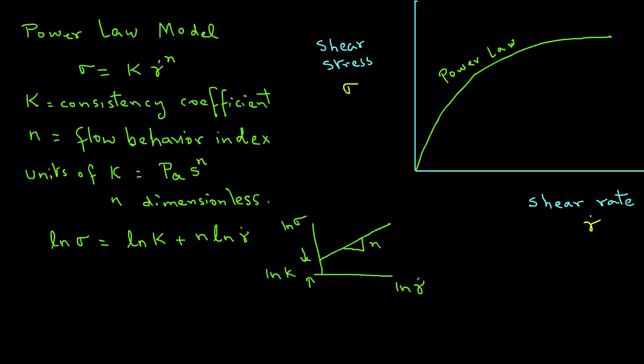Now, in case of pseudo-plastic fluids that show the shear thinning behavior, the value for n, the flow behavior index, is always less than 1.